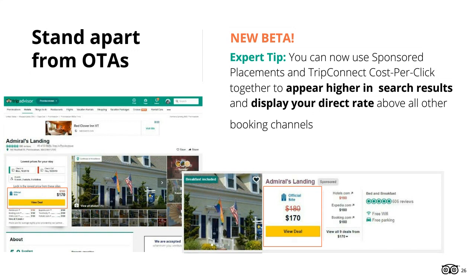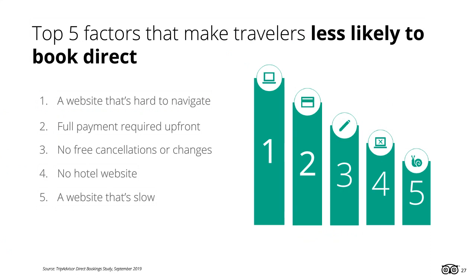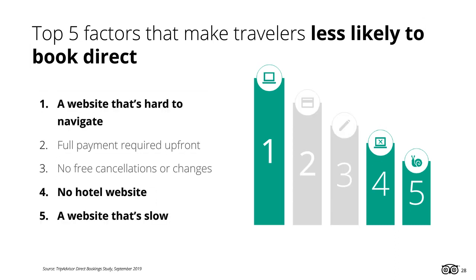So if driving direct bookings is your main business objective, you now have the ability to have your direct rate showcased above the OTAs in your ads on search results, but also on your listing page, guaranteed, as part of the sponsored placements campaign. In that same direct booking survey, we also found the top things that would make travelers less likely to book directly: having a website that's hard to navigate, requiring full payment upfront, not offering the ability to cancel or make changes to reservations for free, not having a hotel website, or having a slow website.